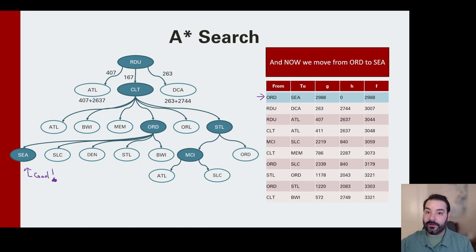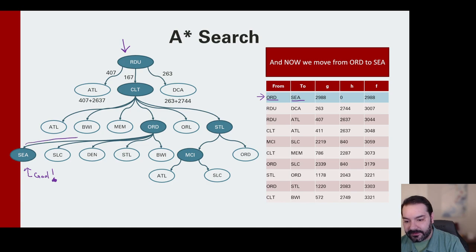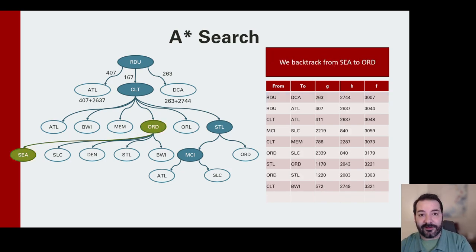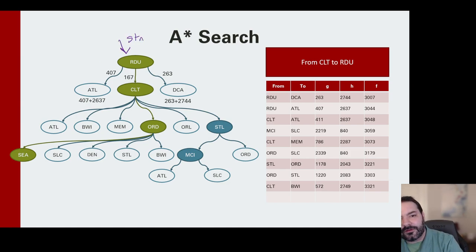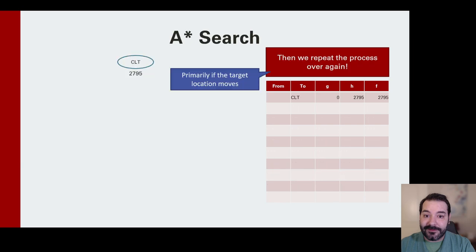We've completed the A* search. But we're still at RDU and haven't made our first move. To determine the first action, we trace back using the 'came from' references: Seattle came from O'Hare, O'Hare came from Charlotte, Charlotte came from RDU — our starting point. So the action we should take is to move to Charlotte. Once the search is done, you do it all over again from the new position.